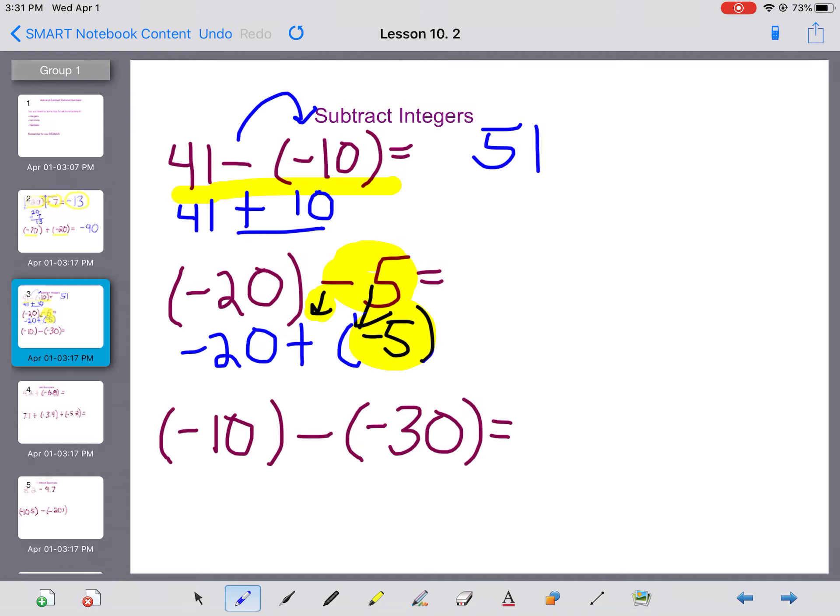So now I end up with actually pretty handy. They're both negative, negative 20 plus negative five gives me negative 25.